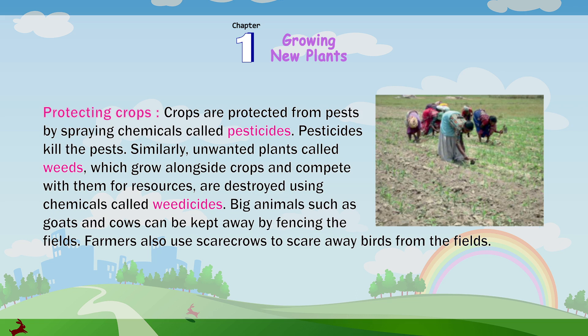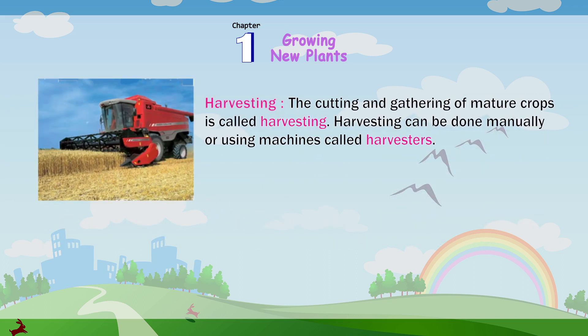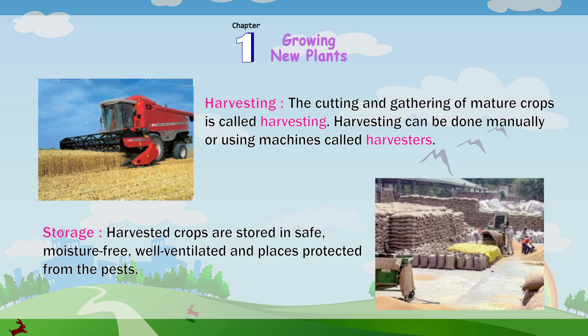Protecting crops: crops are protected from pests by spraying chemicals called pesticides. Pesticides kill the pests. Similarly, unwanted plants called weeds, which grow alongside crops and compete with them for resources, are destroyed using chemicals called weedicides. Big animals such as goats and cows can be kept away by fencing the fields. Farmers also use scarecrows to scare away birds from the fields. Harvesting: the cutting and gathering of mature crops is called harvesting. Harvesting can be done manually or by using machines called harvesters. Storage: harvested crops are stored in a safe, moisture-free, well-ventilated place protected from pests.